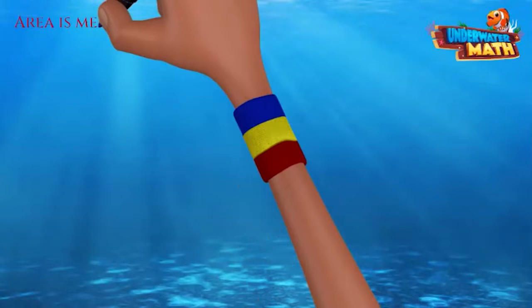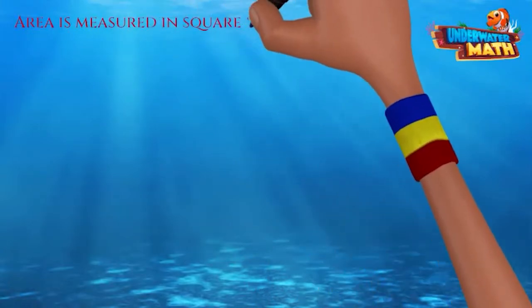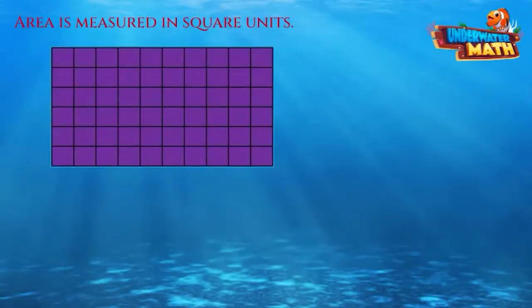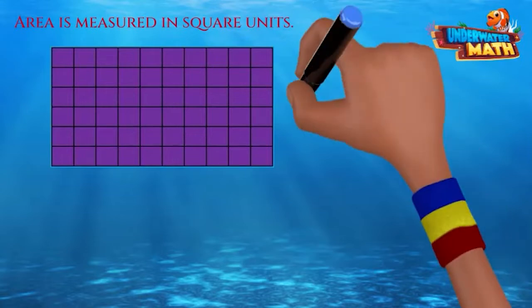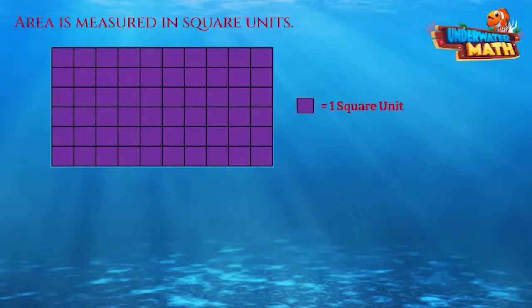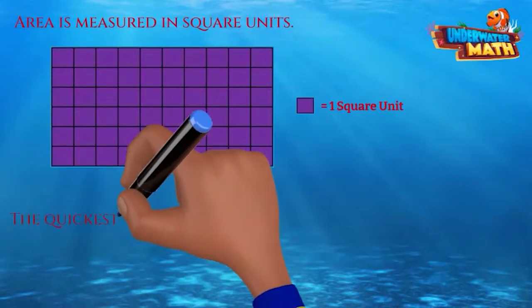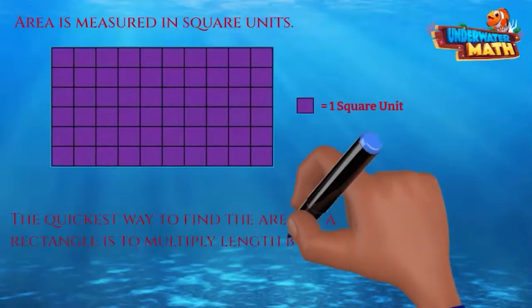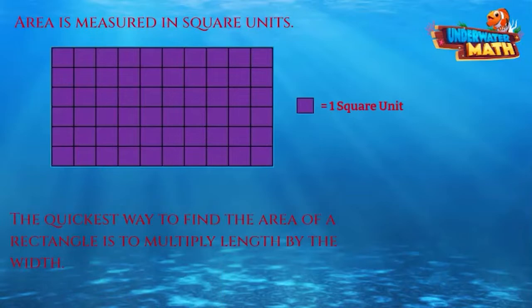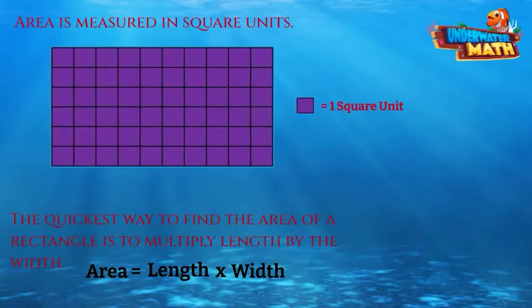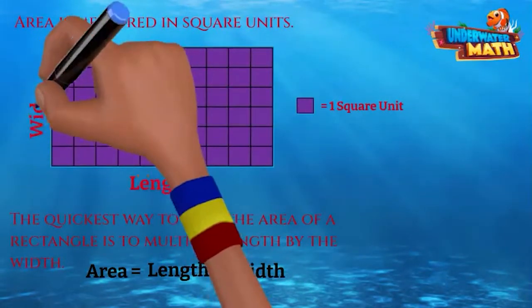How do you find the area of a rectangle? Area is measured in square units. This rectangle is broken into square units. Each square equals one square unit. You can count each square unit, but that will take forever. The quickest way to find area is to multiply the length by the width. Area equals length times width. Length and width are labeled on the rectangle.